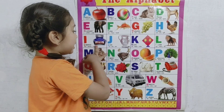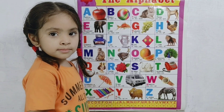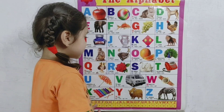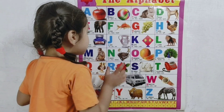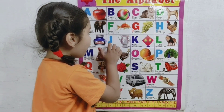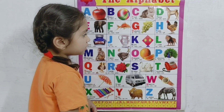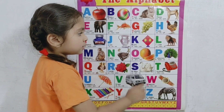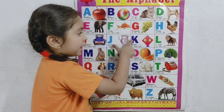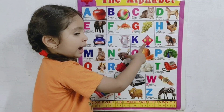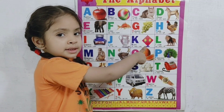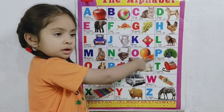I for ice cream, J for jerk, K for cat, K for tiger.